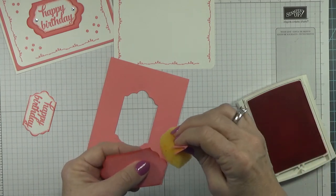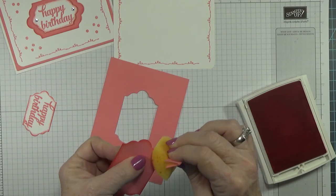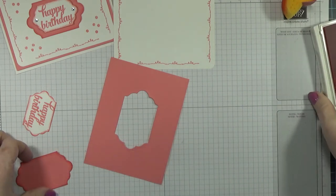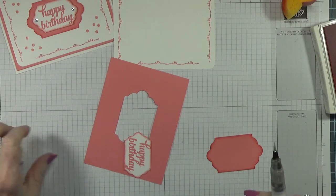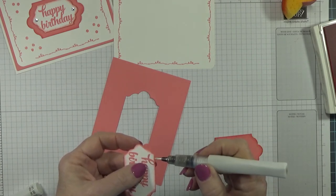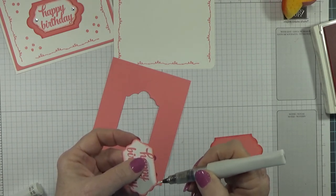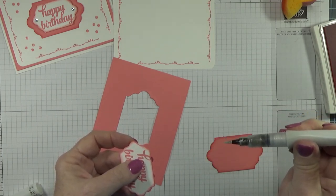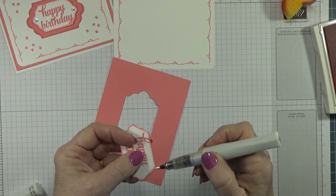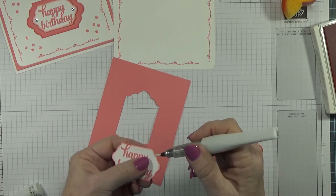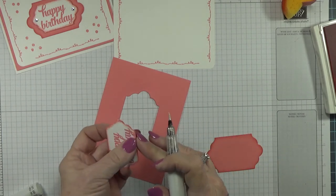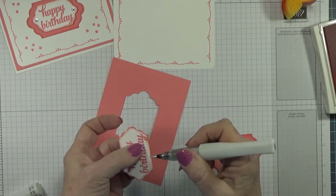Now I am going to take the Wink of Stella and I'm going to go ahead and go around the edge of this. I think I need to get some more glitter in there. It doesn't have to be perfect, especially since this is clear, it just gives it a little bit of a sparkle.